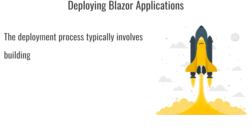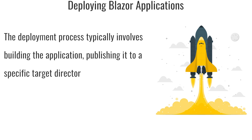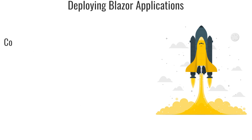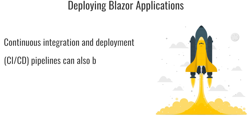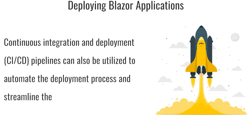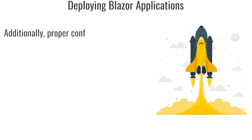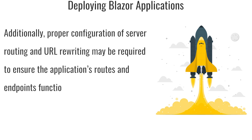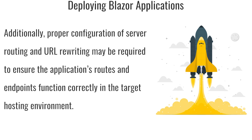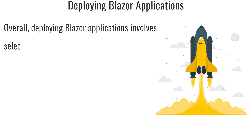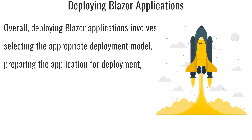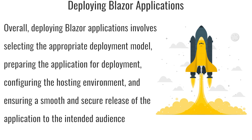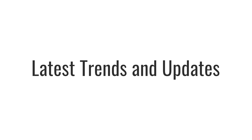The deployment process typically involves building the application, publishing it to a specific target directory, configuring the necessary server settings, and ensuring proper security measures are in place. Continuous integration and deployment pipelines can also be utilized to automate the deployment process and streamline the release cycle. Additionally, proper configuration of server routing and URL rewriting may be required to ensure the application's routes and endpoints function correctly in the target hosting environment. Overall, deploying Blazor applications involves selecting the appropriate deployment model, preparing the application, configuring the hosting environment, and ensuring a smooth and secure release.